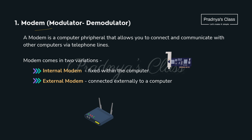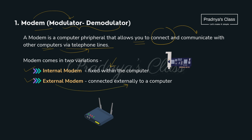The word modem is made up of 2 words: modulator and demodulator. It allows you to connect and communicate with other computers through telephone lines. Modem can be internal, which is fixed inside the computer, or it can be external, which is connected externally to the computer.